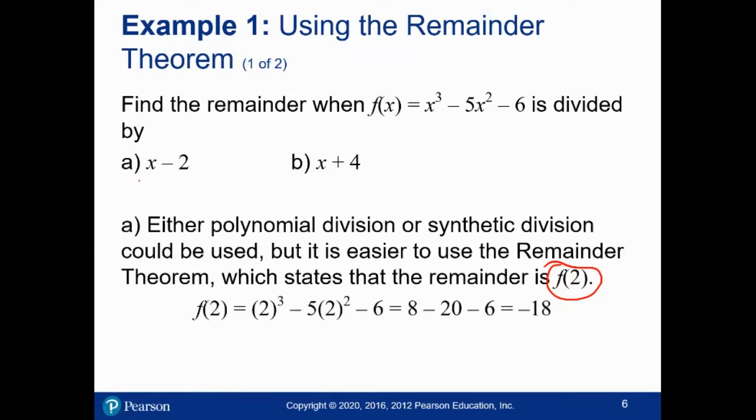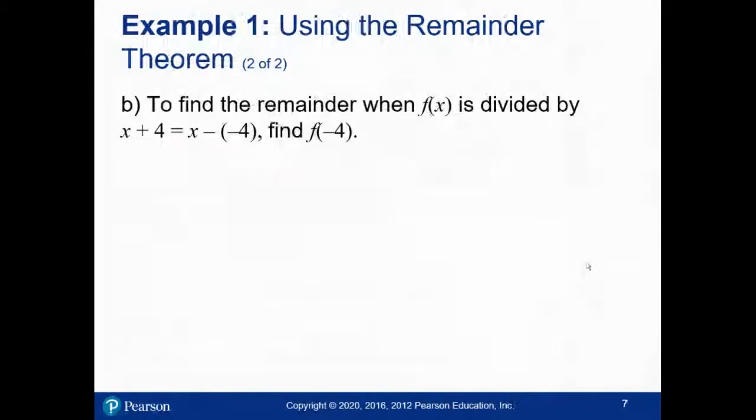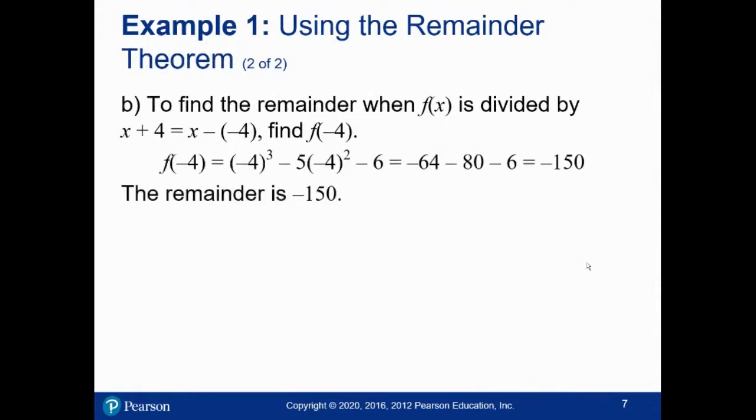Because remember, if you divide by a linear term of x minus a number, the remainder is f of that number. So since we divided by x minus 2, the remainder is exactly f of 2, which is minus 18. So for part b, instead of doing the division, just compute f of negative 4 and get negative 150.